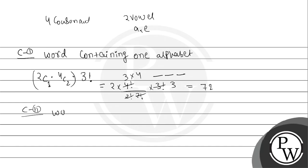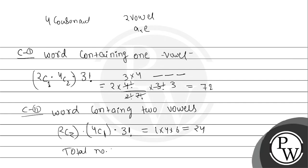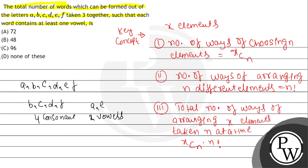Case two: word containing two vowels. We select both vowels, which is 2C2 = 1. Then we select one consonant out of four, which is 4C1 = 4. Then we arrange these three letters, which is 3 factorial = 6. So that gives us 1 × 4 × 6 = 24. The total number of words is 72 plus 24, which equals 96. So our answer is option C, and this question is in the easy category.